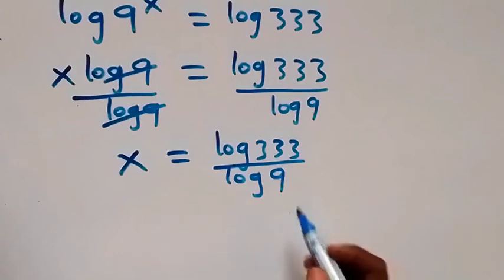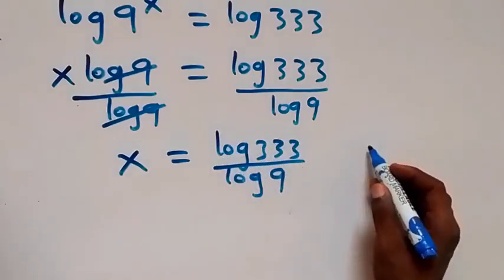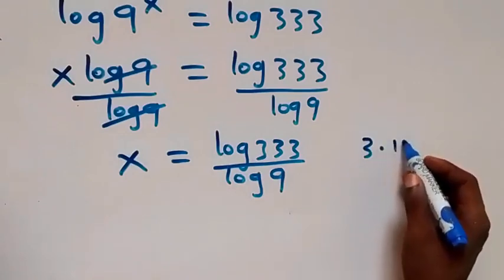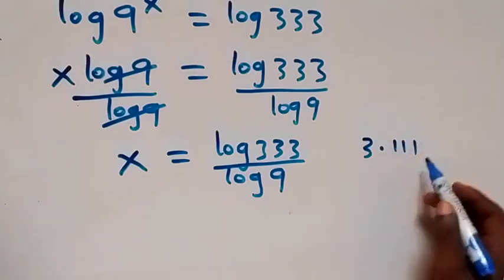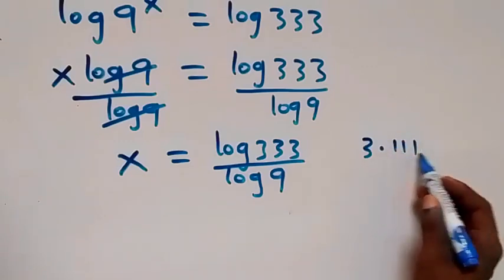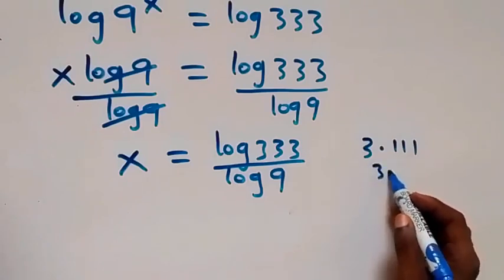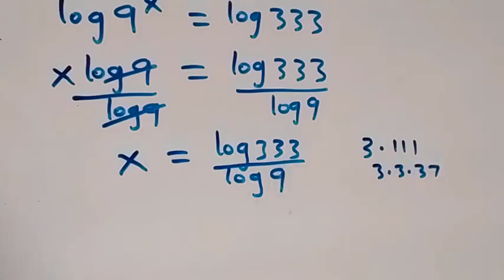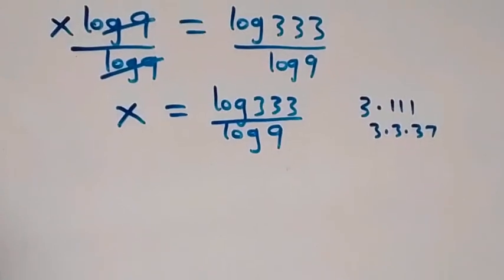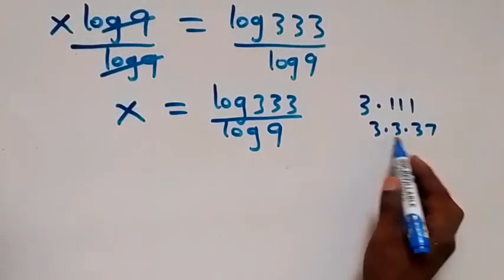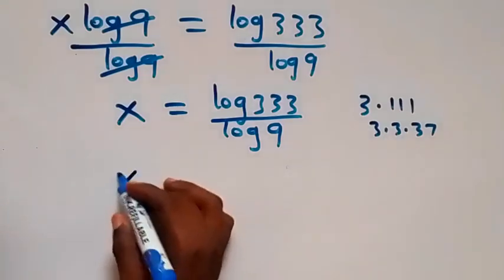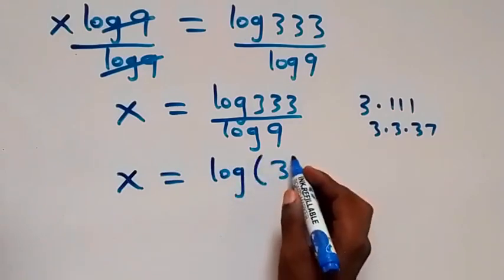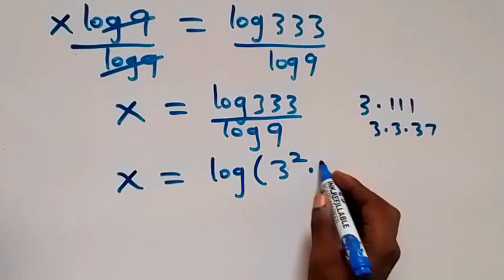Then from here, let's rewrite log 333. We can write 333 as 3 times 111, and 111 can be written as 3 times 37. So 333 equals 3 times 3 times 37, which means 333 equals 3 squared times 37.